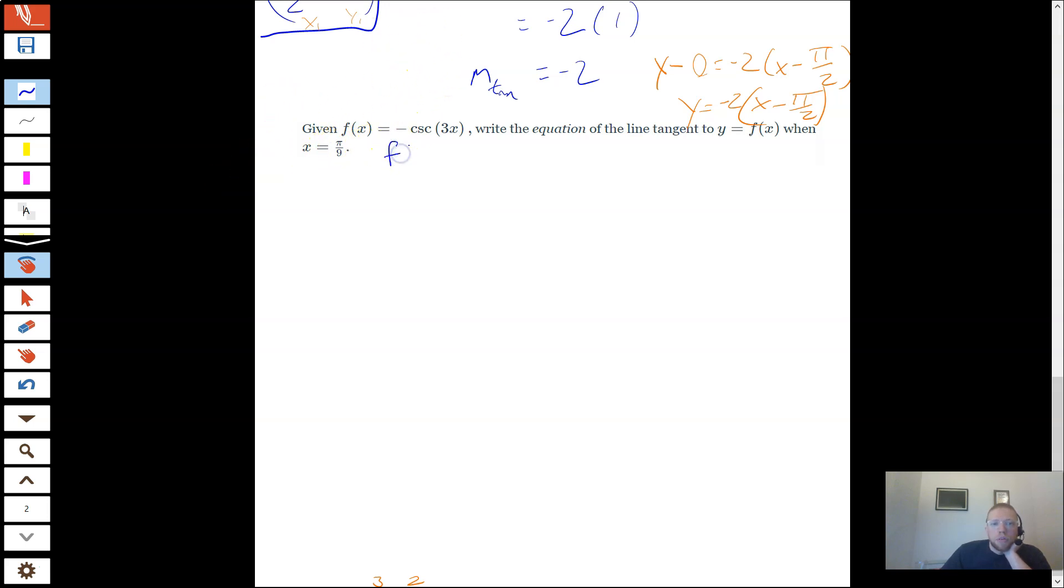And then what we will do is take the derivative. So f'(x). The derivative of cosecant is negative cosecant cotangent. So I'll say negative, I'll bring that down. And then I'll write another negative because that's part of my derivative rule. Cosecant 3x, cotangent 3x. And then I still have to do chain rule because that's a function inside there. Times 3.